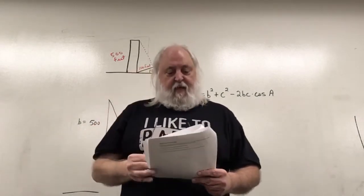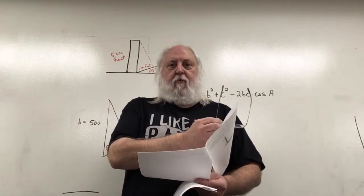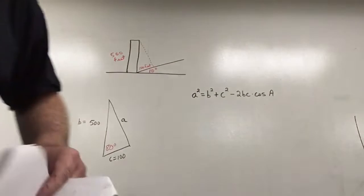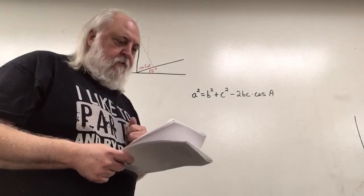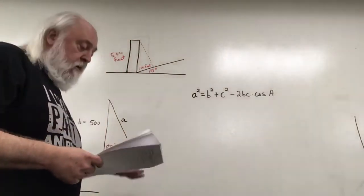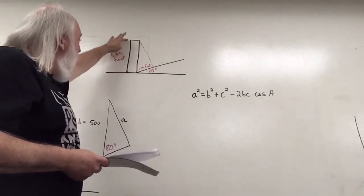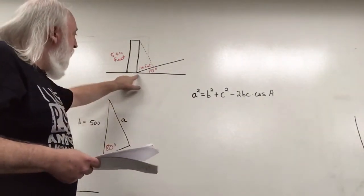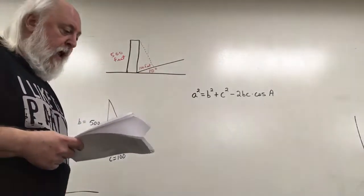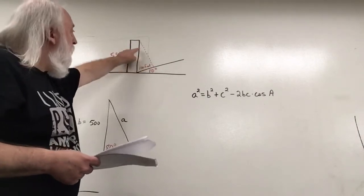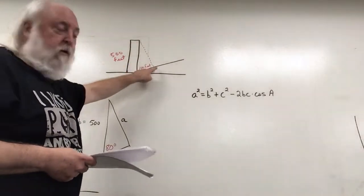In this video I am working the application problem on page 3 of your section 4.3 note packet on the law of cosines. The problem states that the height of a radio tower is 500 feet and the ground on one side of the tower slopes upward at an angle of 10 degrees. We are asked how long a guy wire would have to be if it is attached to the top of the tower and 100 feet from the base of the tower on this upward sloped earth.